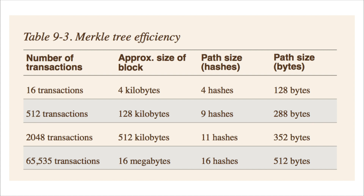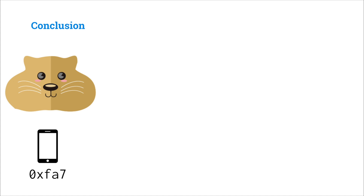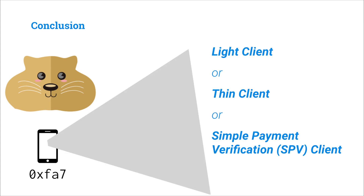The amount of data you need to hash to verify a Merkle proof, rather than all the transactions in a block, grows logarithmically with the number of transactions. So in an extreme example with 65,000 transactions per block — approximately 16 megabytes — the size of our Merkle proof is only 512 bytes, meaning we hash 30,000 times less data. Tan Gerbil can verify that the transactions she cares about are included in the blockchain without worrying about all the others. This is what's called running a light client, sometimes also referred to as a thin client, or in Bitcoin, a simple payment verification client. Although Tan Gerbil is not verifying the validity of the entire blockchain, as long as she trusts the block headers, she can verify that the transactions she cares about are included in that chain.